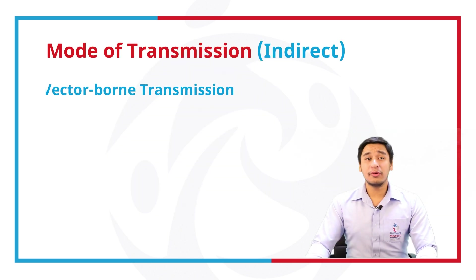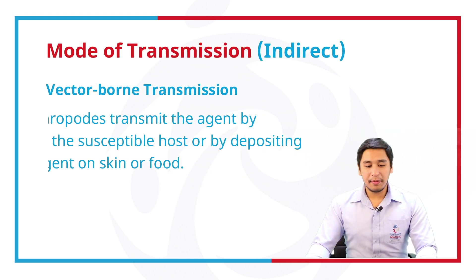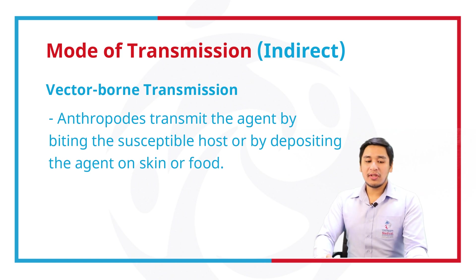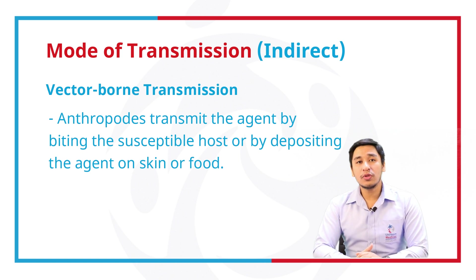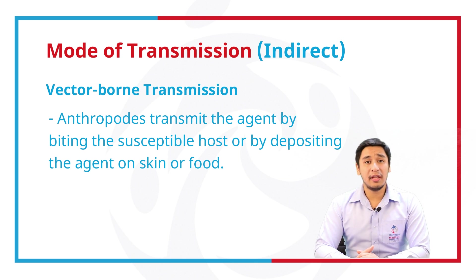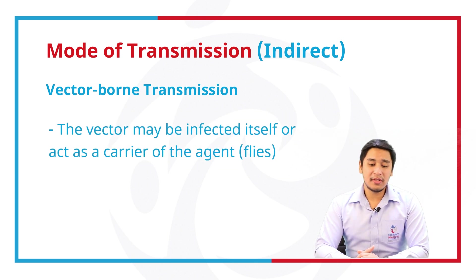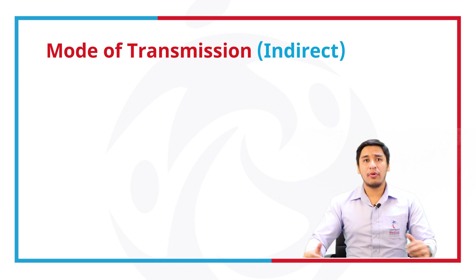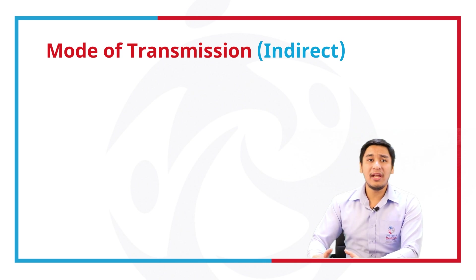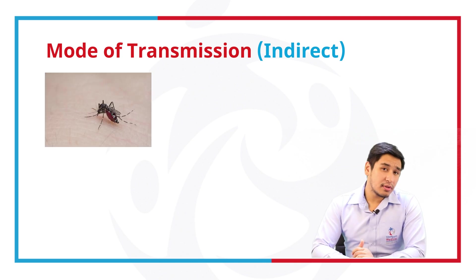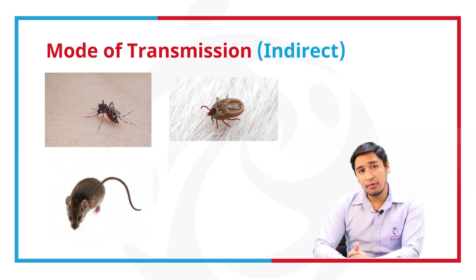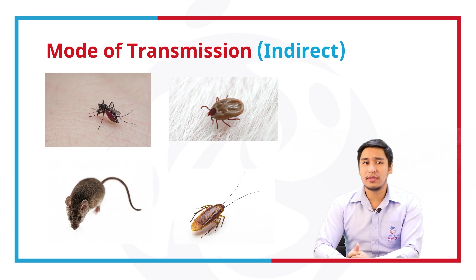Vector-borne transmission. Arthropods transmit the agent by biting susceptible hosts or by depositing the agent into the skin or food. The vector may be infected itself or act as a carrier of the agent, such as flies. Other vector-borne transmission agents include mosquitoes, ticks, flies, rodents, and even cockroaches.